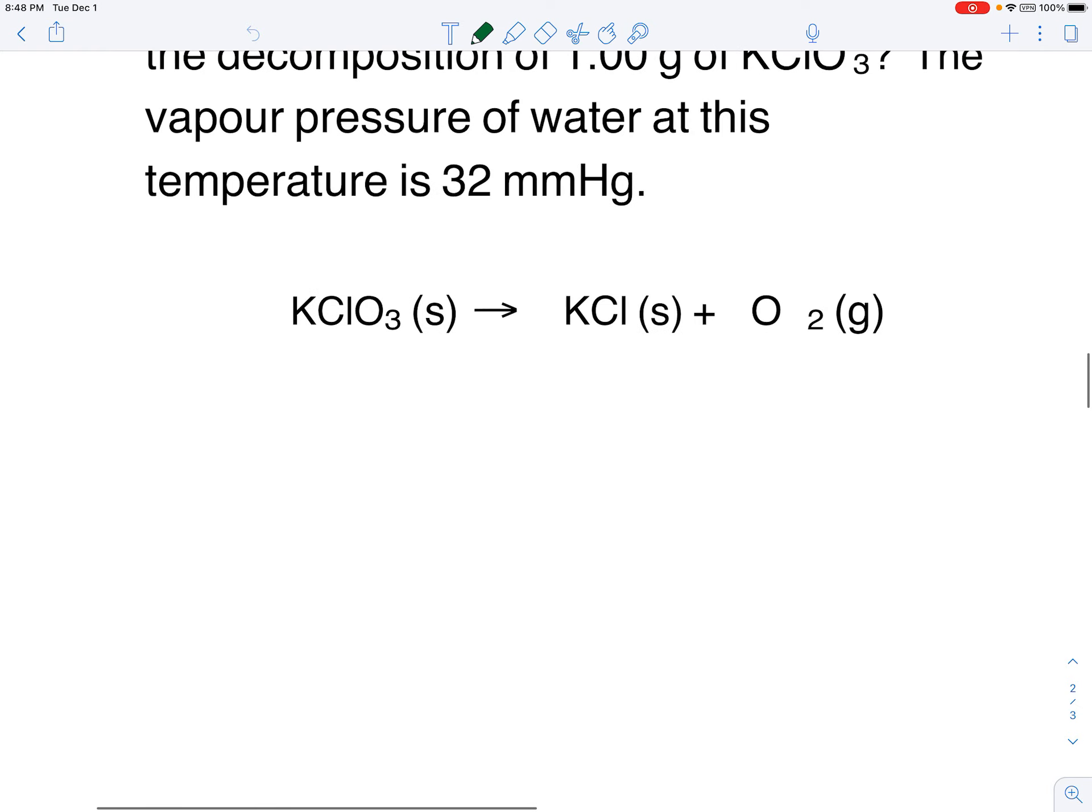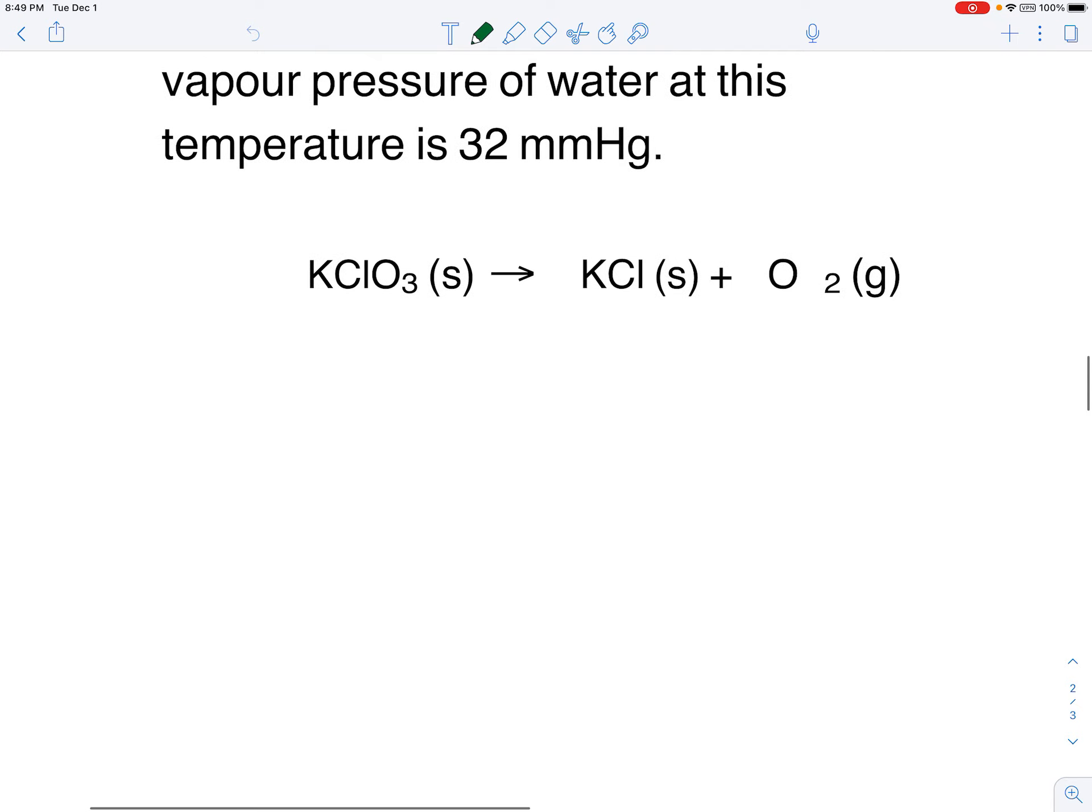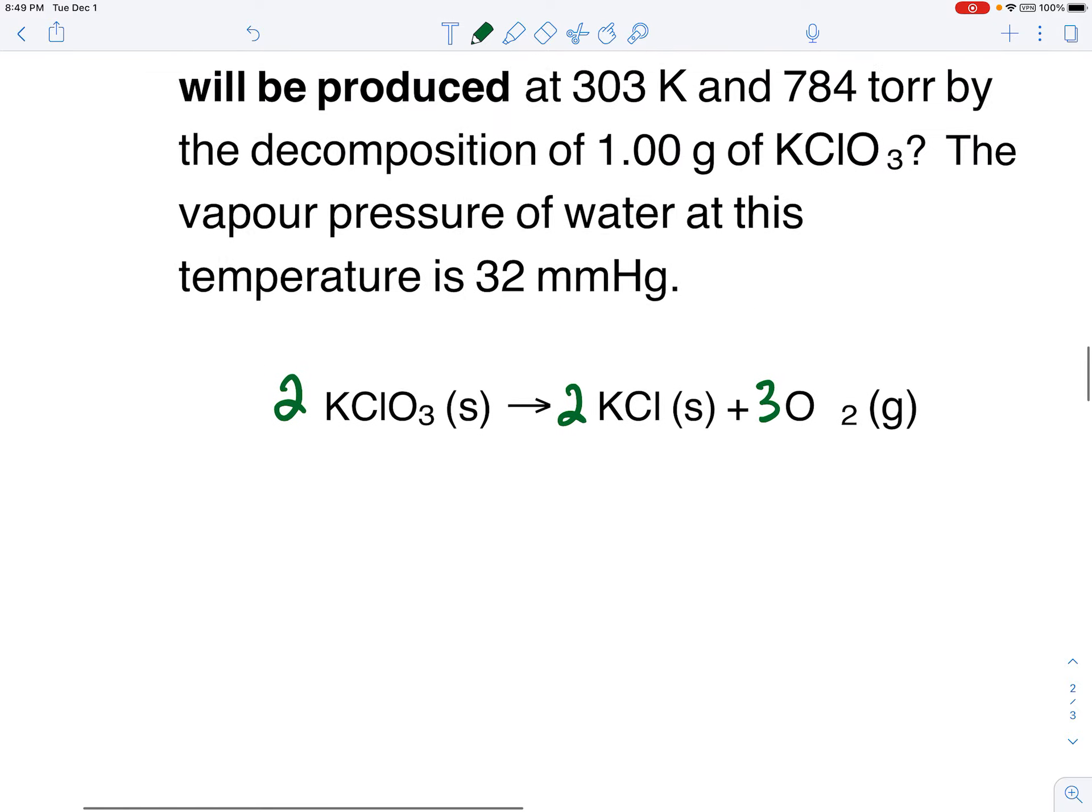Alright, if you are watching the video you can pause and try to balance that yourself on a piece of paper. So the issue seems to be the O's. There's 3 on the left and 2 on the right. And 3 and 2 both go into 6. So let's balance that by putting a 2 in front of potassium chlorate, a 3 in front of the oxygen, and then that 2 in front of potassium chlorate means we need to put a 2 in front of the KCl as well. So there I think we have a balanced equation.